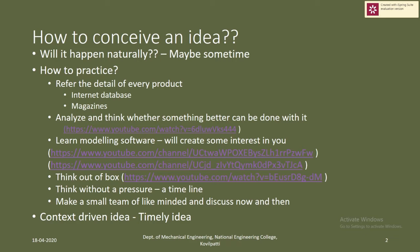Make a small team of like-minded people, because in my opinion a single person cannot create the best product. You have to have a team of at least three members of like-minded people who have the same kind of interest in developing the product, and they should also have some expertise in other fields. You can discuss ideas now and then, develop good ideas that you come across, and that's the way you can cultivate your habitual idea generation process.